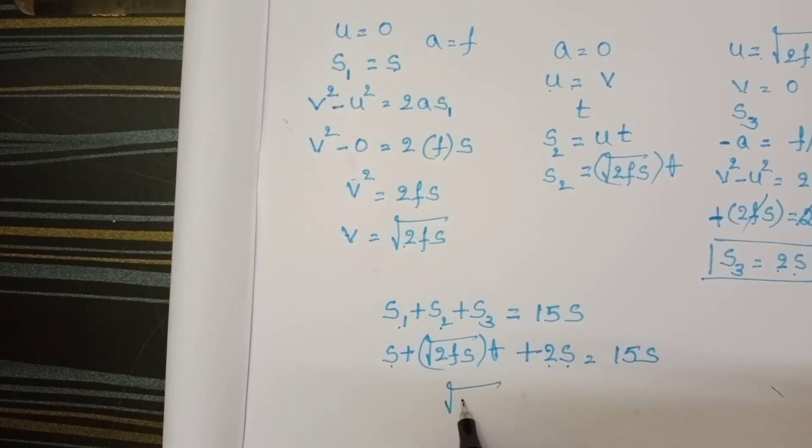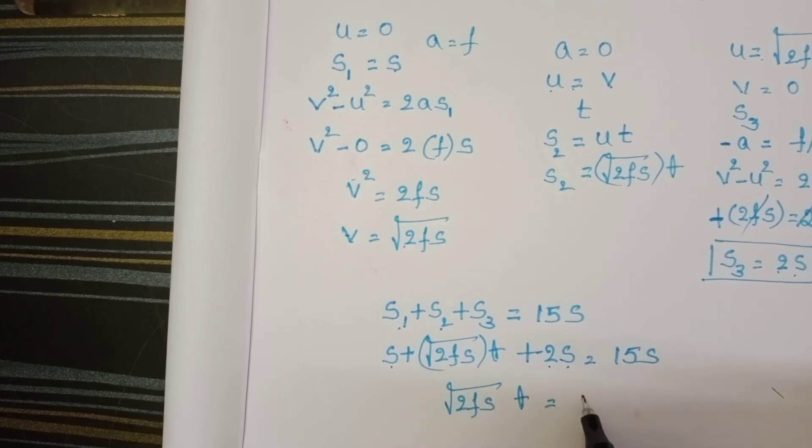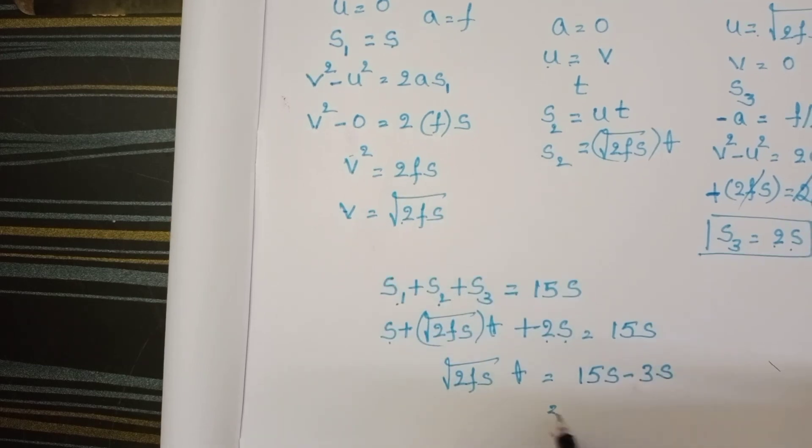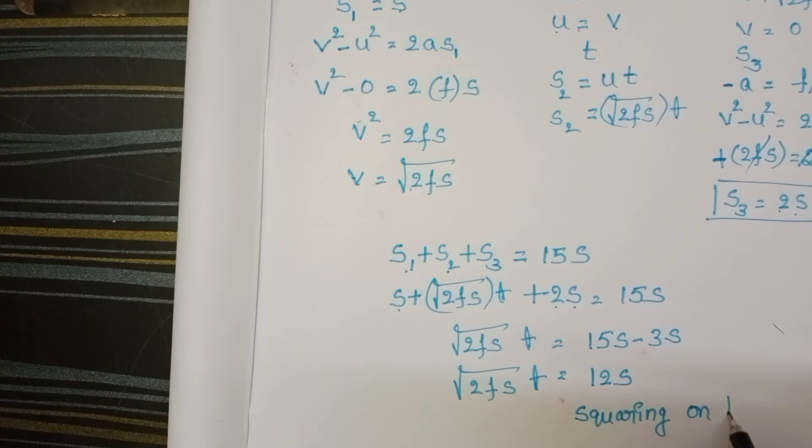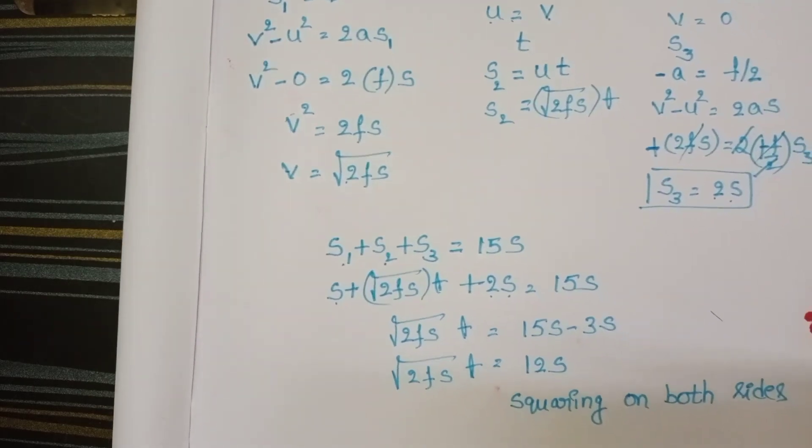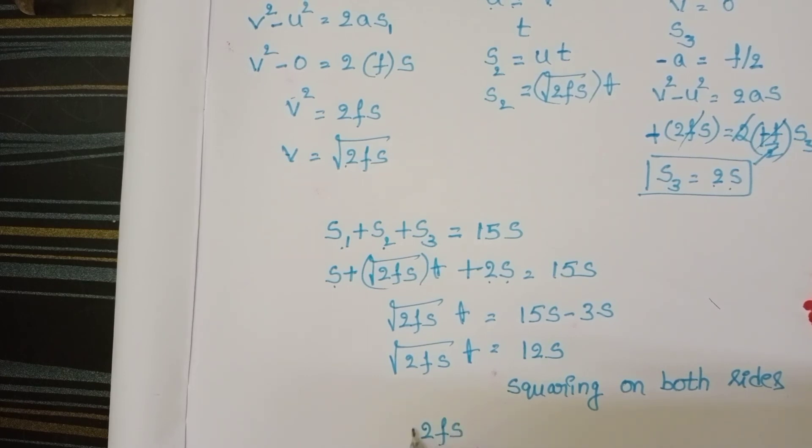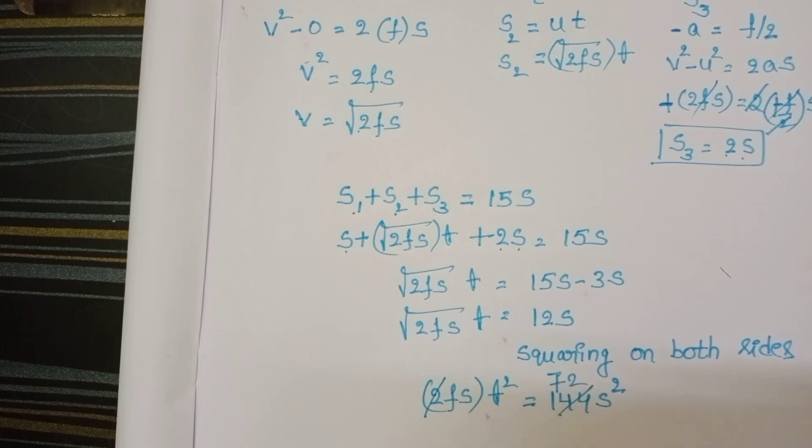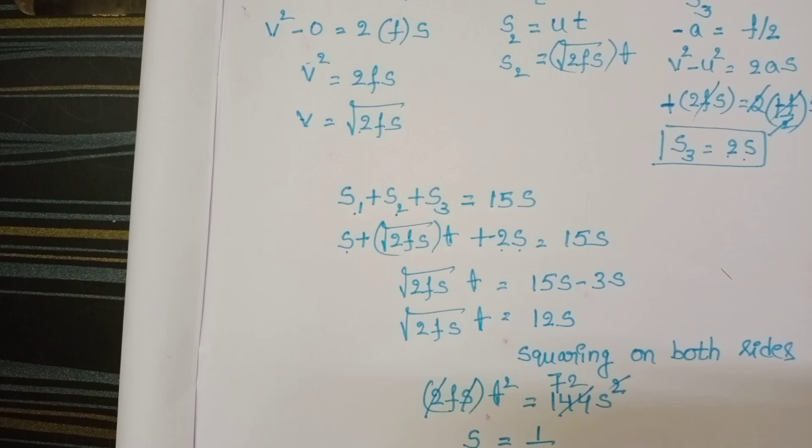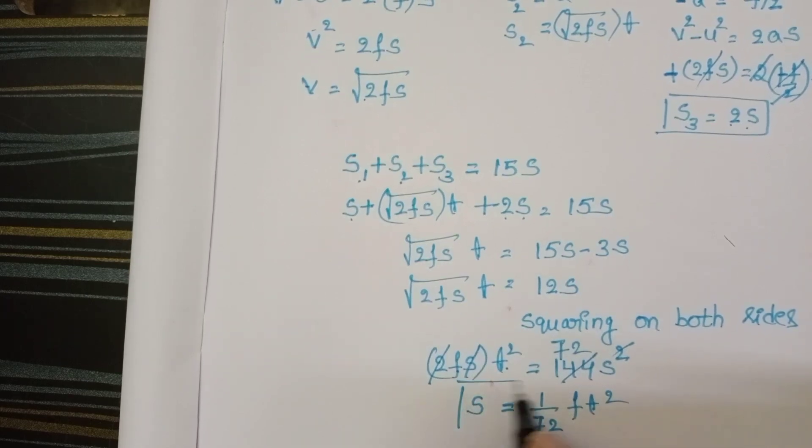Simplify this. s + 2s = 3s. So √(2fs) × t = 15s - 3s = 12s. For the simplification, squaring on both sides, 2fs × t² = 144s². Here 2 goes to 72s and s also gets cancelled and from this s = 1/72 × f × t². So s = 1/72 × ft², third option is correct.